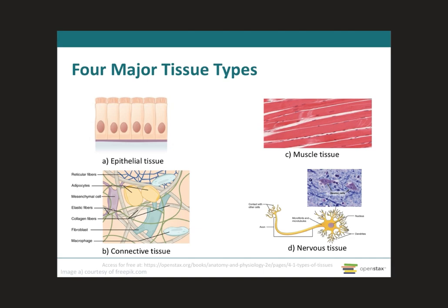Here we have the four main tissue types: epithelial tissue, connective tissue, muscular tissue, and nervous tissue. Let's focus first on the epithelial tissue, which contains different cell types. This epithelial tissue will cover the body surfaces — what you call your skin — and it also lines hollow organs, body cavities, and ducts. In addition to all this, it does form glands.